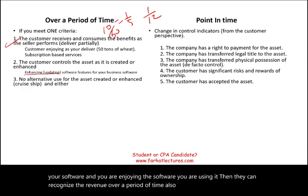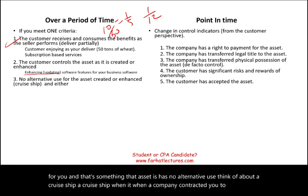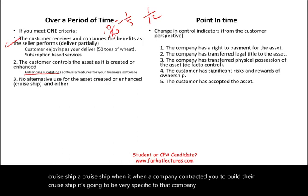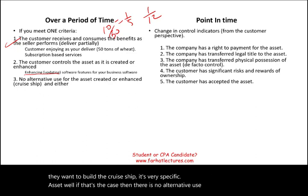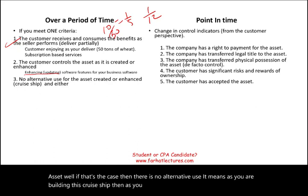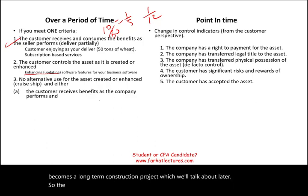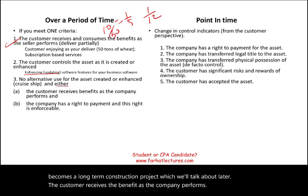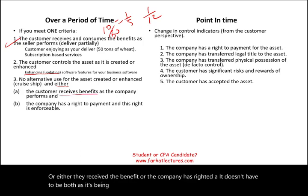Also, if they are building something for you that has no alternative use — think of a cruise ship built specifically for Norwegian Cruise Line — as they build it, they can recognize revenue over time. The third criteria: the company has an enforceable right to payment. If Norwegian cancels the project at 20-30% completion, the contractor is still entitled to payment because there's an enforceable contract with penalties. If that right exists, revenue can be recognized over a period of time.